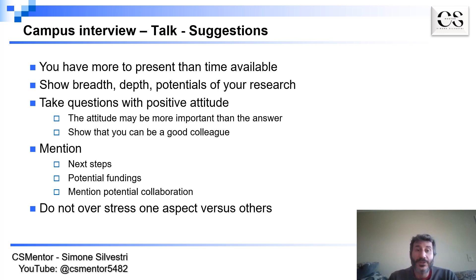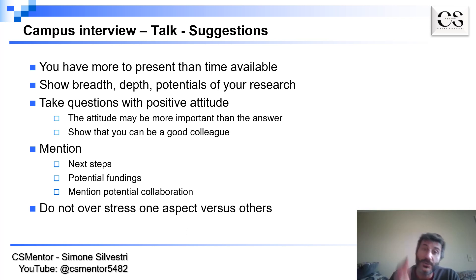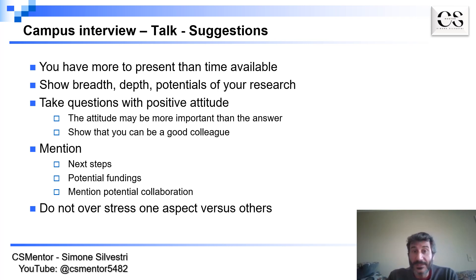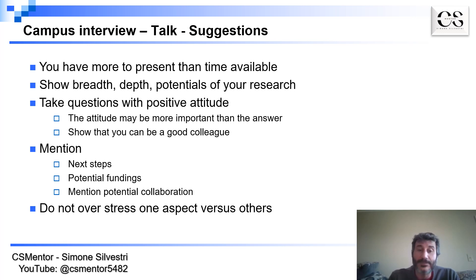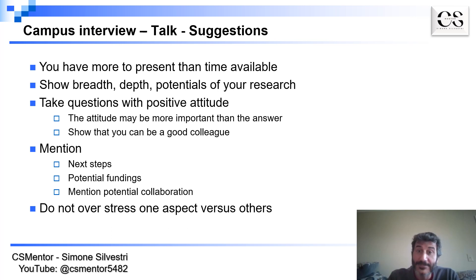Once you have shown the breadth, pick one research topic — probably the strongest one you have — and go deep on that topic. Show the technical details; this will likely be the part that takes the most time in your talk. At the same time, use this example to show potential for collaboration with other faculty in that department and university.